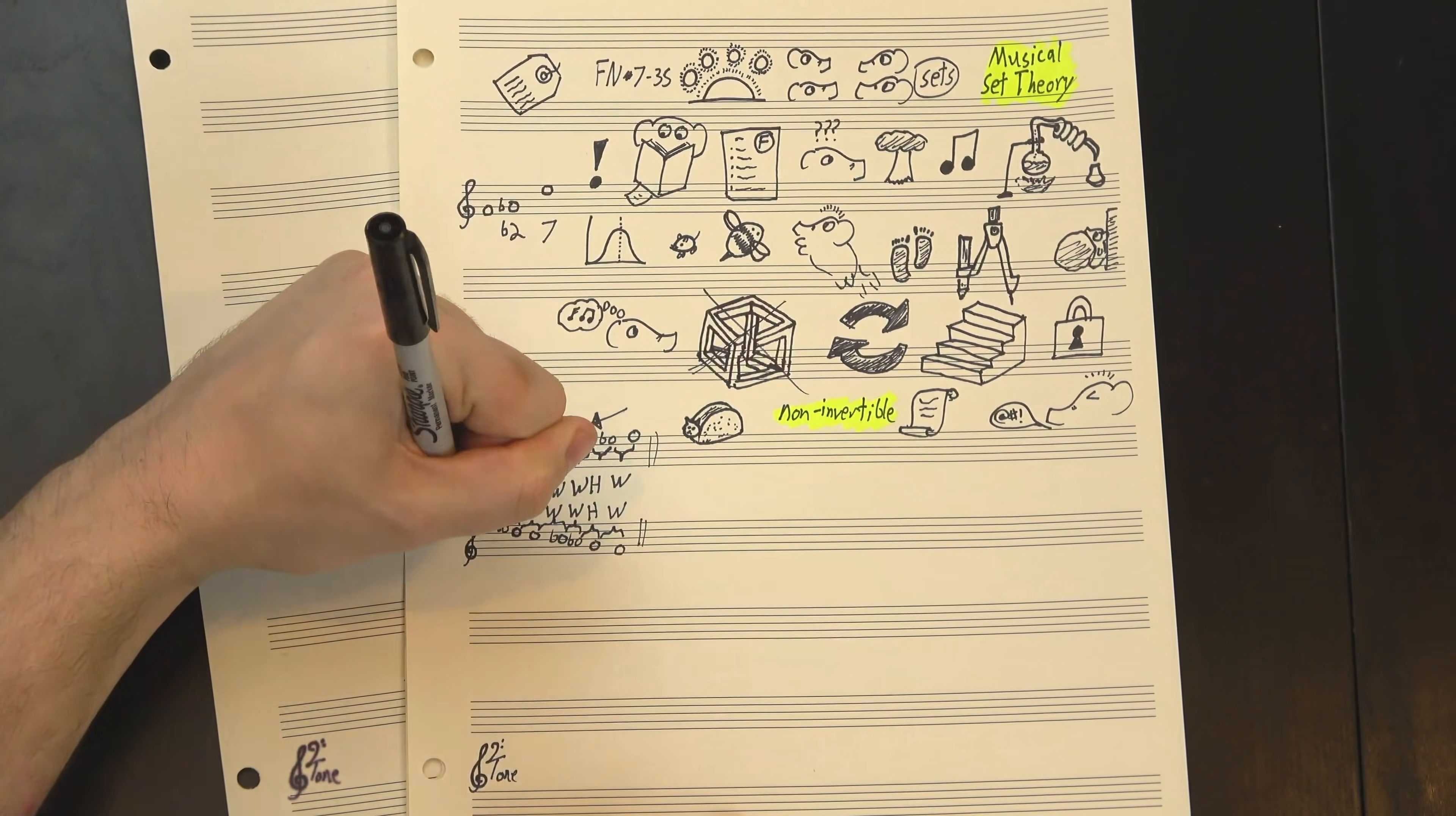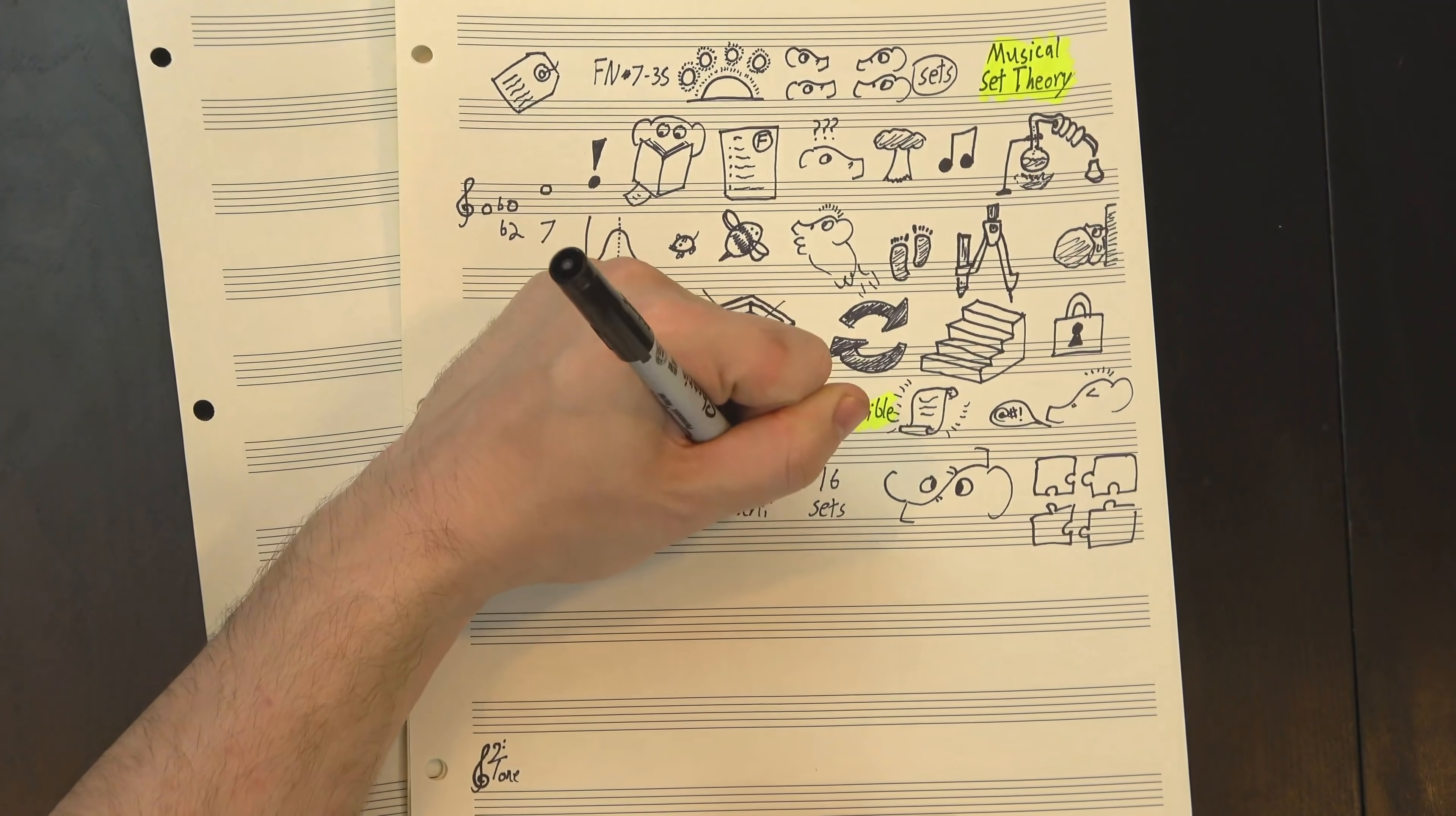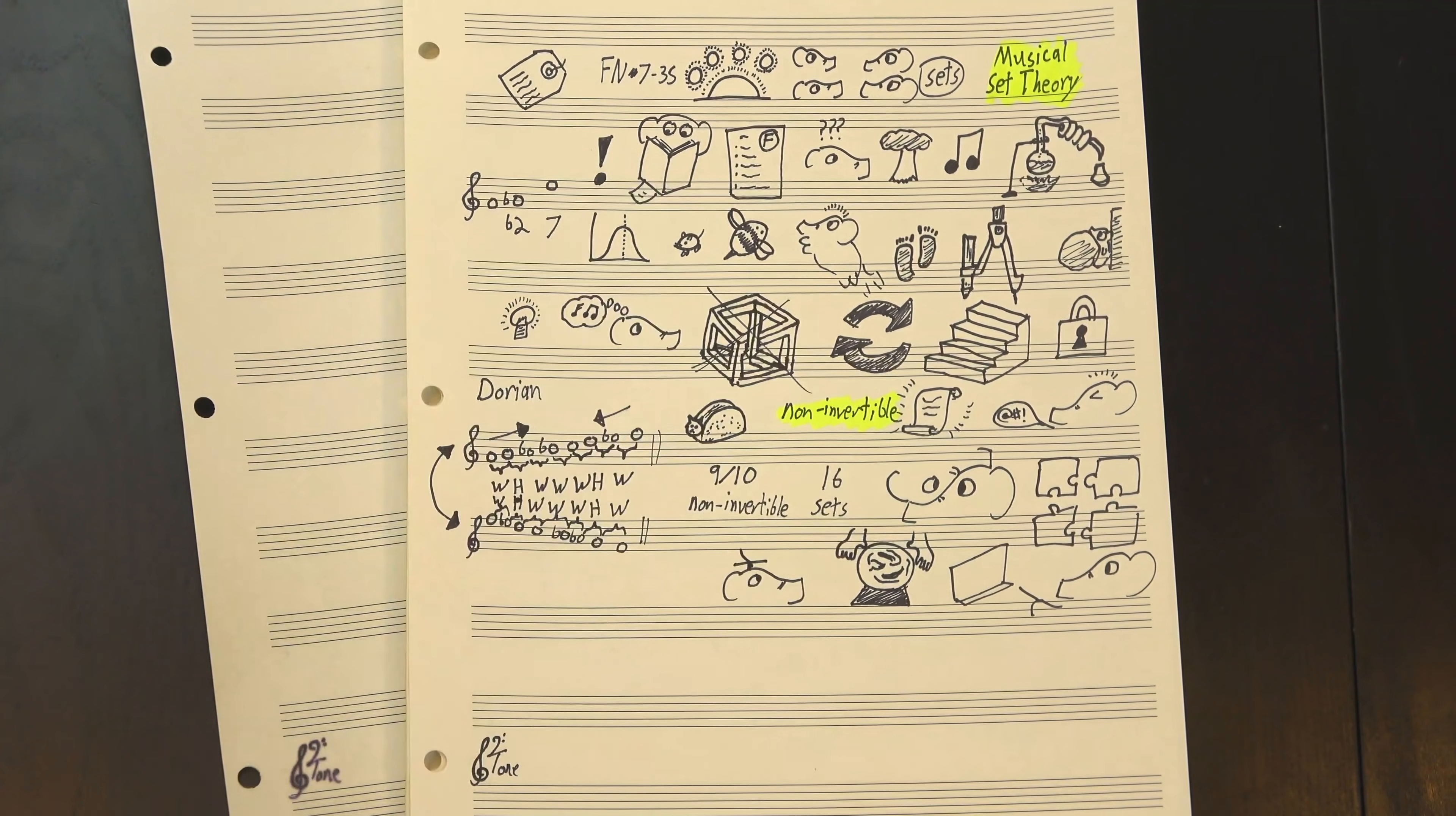And since, as we mentioned, sets are just interval patterns, if one mode inverts to itself, then all the other modes will wind up inverting to each other, and the family as a whole won't actually invert at all. Now, not all the scales on my list do this. There's 16 sets represented, and only 9 of them are non-invertible, which is barely over half. But, on the other hand, there's only 10 non-invertible 7-note sets total, which means 90% of them are represented here, so while anti-scale equivalence doesn't predict non-inversion, non-inversion does a pretty good job predicting anti-scale equivalence, which probably means something.